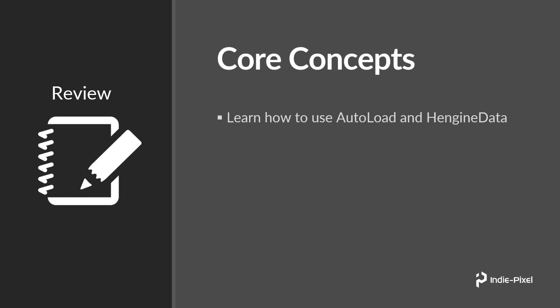Let's quickly talk about what we're going to cover in this section. First and foremost, I want to cover some of the new features of the asset link — specifically auto load and H Engine data — and how that helps speed up our workflow when using TOPs inside of Unity or H Engine. Then we're going to create a basic path tool for level designers, covering the core concepts of how to create a useful generic tool for paths, roads, or whatever needs to be defined as a path in your game.